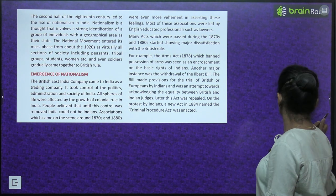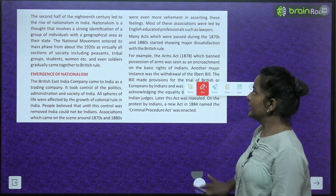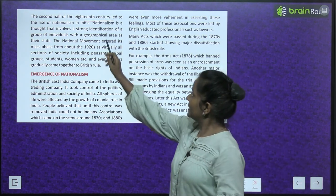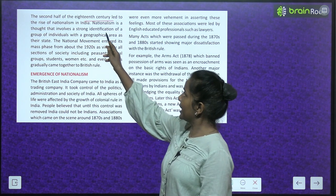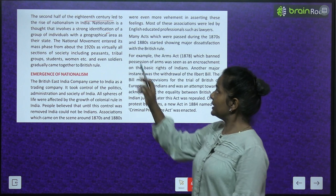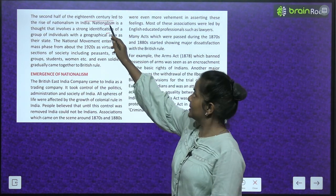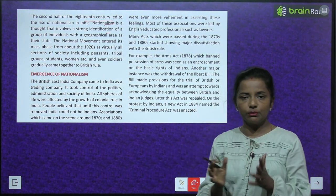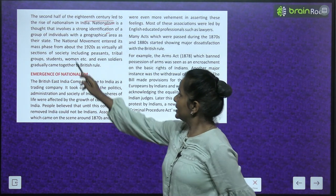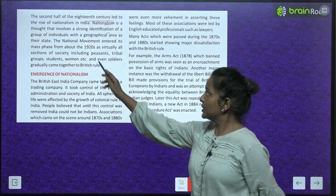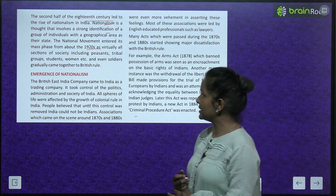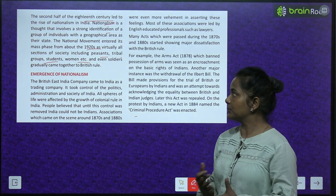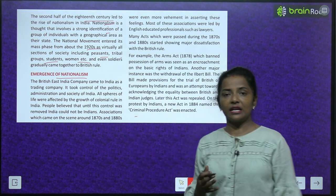The second half of the 18th century led to the rise of nationalism in India. Nationalism is a thought that involves a strong identification of a group of individuals with a geographical area as their state. The national movement entered its mass phase from about the 1920s as virtually all sections of society including peasants, tribals, groups, students, women and even soldiers gradually came together to oppose British rule.